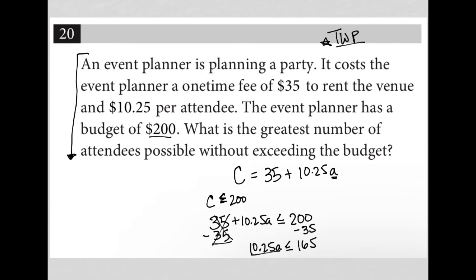And I'm going to divide both sides by, let me go up here for some more space. So 10.25A less than or equal to $165. Divide both sides by 10.25. So here I'd have A is less than or equal to.